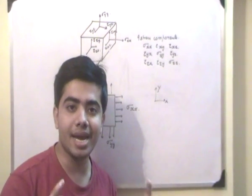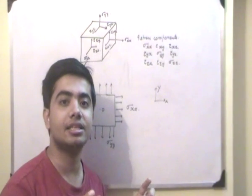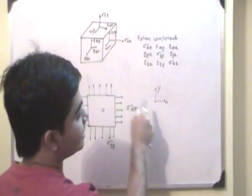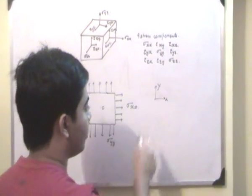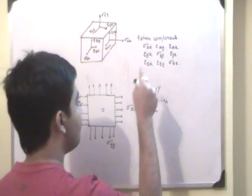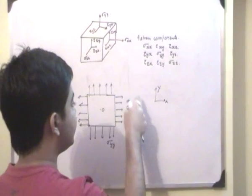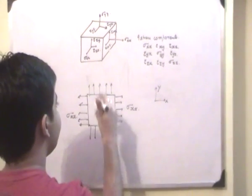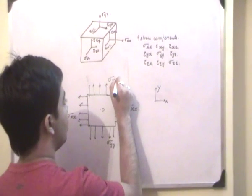Here we will only consider stress components along x direction and stress components along y direction. And sigma xx represents the normal stress along x direction. Sigma yy represents the normal stress along y direction.